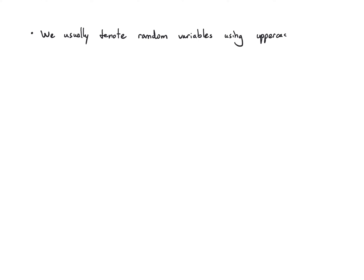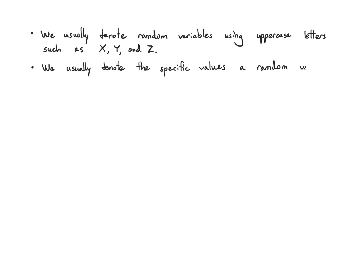We're usually going to write out our random variables using uppercase letters — typically X, Y, Z, maybe dipping a little further to U, V, W — staying at the end of the alphabet. That's just a typical convention. And we're going to denote the specific values that a random variable can take with lowercase letters: little x, little y, and little z.